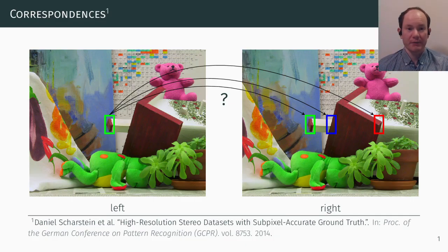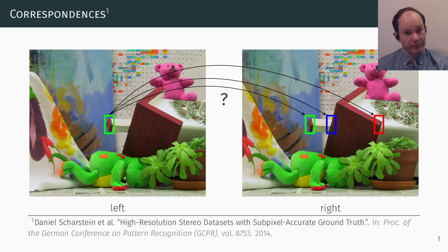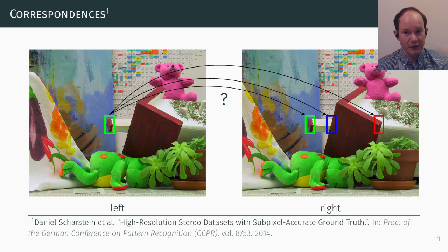If we want to estimate the scene structure from these two images of the Middlebury stereo benchmark, we need to establish correspondences. But which of the three colored patches is the correct one? Obviously the green patch is most similar, so how can we define this measure of similarity?